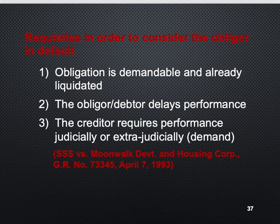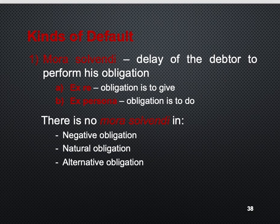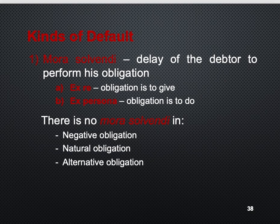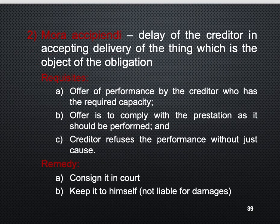The requisites in order to consider the obligor in default are: the obligation is demandable and already liquidated, the obligor or debtor delays performance, and the creditor requires performance judicially or extrajudicially. We have kinds of default: mora solvendi — the delay of the debtor to perform his obligation. There is no mora solvendi in a negative obligation, in a natural obligation, or in an alternate obligation. Then we have mora excipiendi — the delay of the creditor in accepting the delivery of the thing which is the object of the obligation.